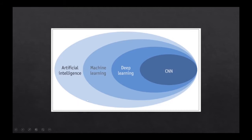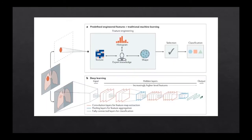It's important to understand that most imaging literature related to radiology deals with CNN deep learning — convolutional neural networks — which is a subset of deep learning, which is a subset of machine learning, all under the umbrella of artificial intelligence. In our practice as radiologists dealing with AI, there are two paradigms: traditional machine learning and deep learning.